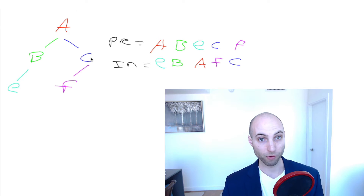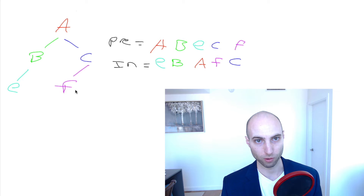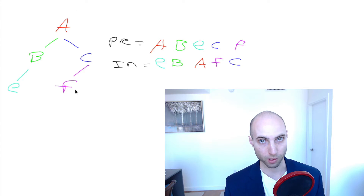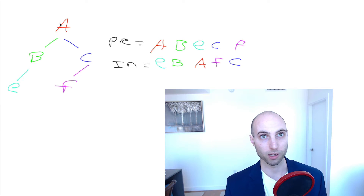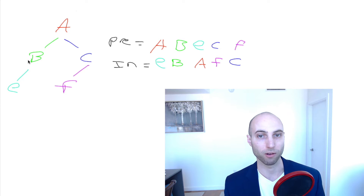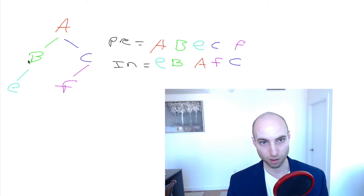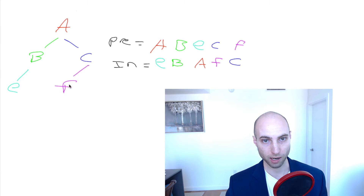C comes before its left subtree, which gets printed as F. Contrasting with inorder traversal, each root node is in between its left and right subtrees. A is in the middle at the top of the tree. In inorder, we're at a node and we first print its left subtree. We come down to B, and since it's recursive, we first print B's left subtree, so E first. Then we backtrack and print B, then A in the middle, then F, then C. Each node is in between its left and right subtrees.